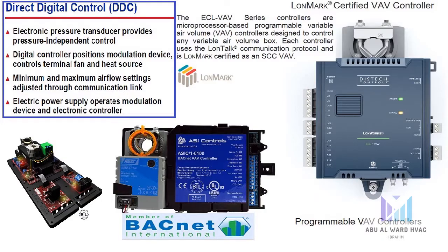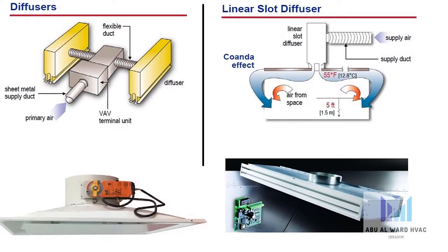The next important component of VAV terminals is diffusers. Each VAV terminal unit is commonly connected to a downstream sheet metal duct that is then connected to remotely located diffusers by flexible ducts. Diffusers distribute the supply air effectively to the conditioned space. Proper air diffusion is an important comfort consideration, especially in VAV systems, because VAV systems require the diffuser to provide proper space air mixing over a wide range of airflows. Diffusers specifically intended for VAV applications should be used to prevent cold air dumping at low airflow rates.